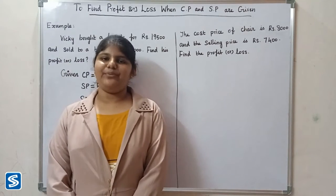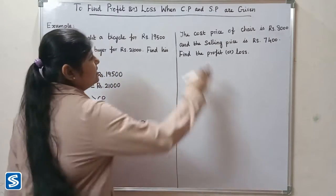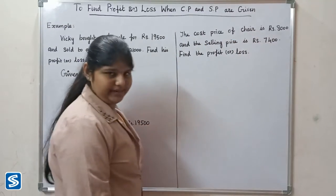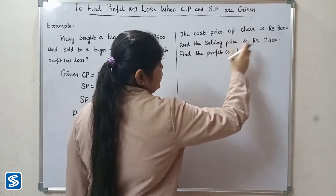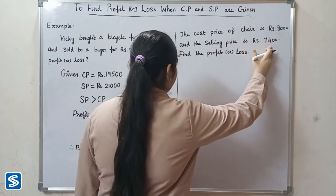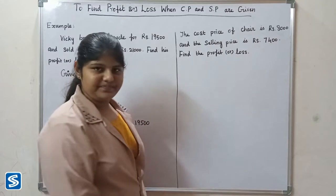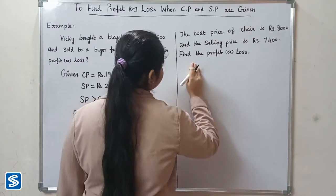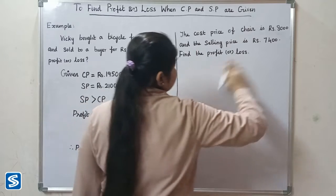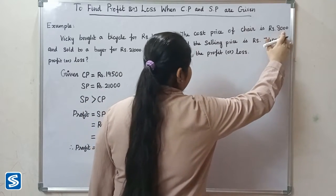Now let us take one more example. The cost price of a chair is rupees 8,000 and the selling price is rupees 7,400. Find the profit or loss. Here the given cost price is rupees 8,000.